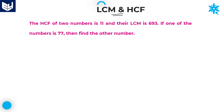The HCF of two numbers is given, that is 11. The LCM of those two numbers is 693. We don't know those two numbers, but the HCF is 11 and LCM is 693. If one of the numbers is 77, then find the other number.